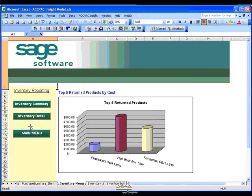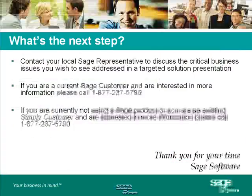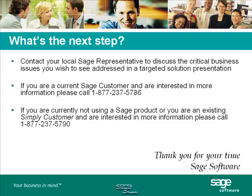This concludes the demonstration of Sage ACPAC Insight. If you would like more information on how this product can address your critical business issues, you can contact your local solution provider. If you don't know your local solution provider and you're an existing Sage customer, call 1-877-237-5786. If you are not currently using a Sage Software product or you are a Simply Accounting customer, call 1-877-237-5790. On behalf of Sage Software, thank you for previewing our products.